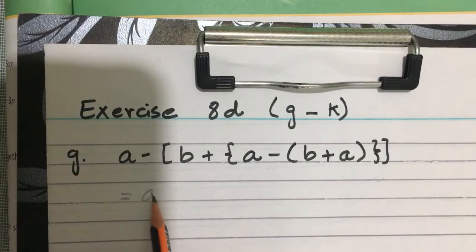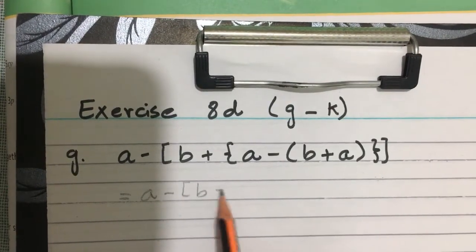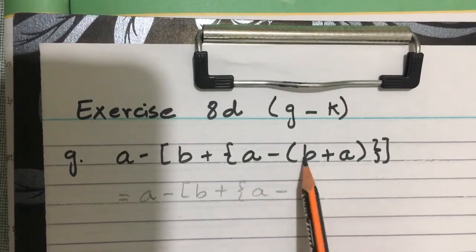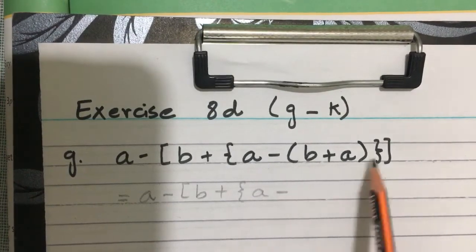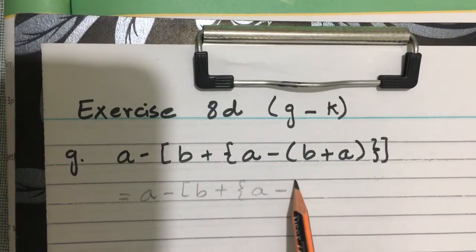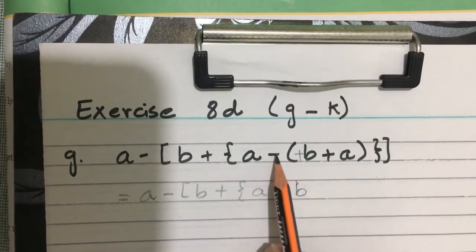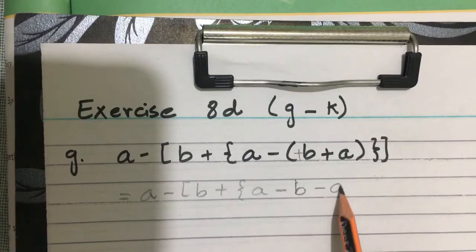So first is: a minus b plus a minus. These are two different expressions so we will open this small bracket. Minus times plus is minus, plus times plus minus equals minus b, and plus times minus a.